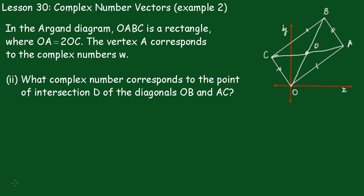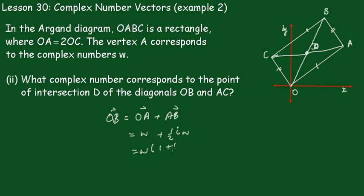Now in Part 2, what complex number corresponds to the intersection point D of the diagonals OB and AC? We know that vector OB is equal to OA plus AB. OA is W. Now AB is going in the same direction as OC with the same magnitude, which we worked out as being a half iW. So OB equals W times (1 + a half i).